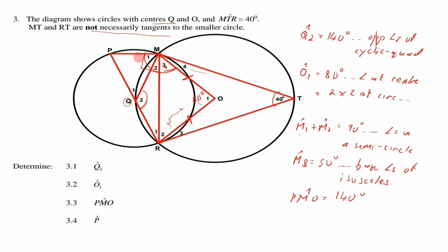For angle P, we first find R1 using the triangle with Q2 = 140°. Since QR and QM are both radii, triangle QMR is isosceles. So the remaining 40° is shared equally: R1 = M-angle = 20° each. This is from base angles of an isosceles triangle.